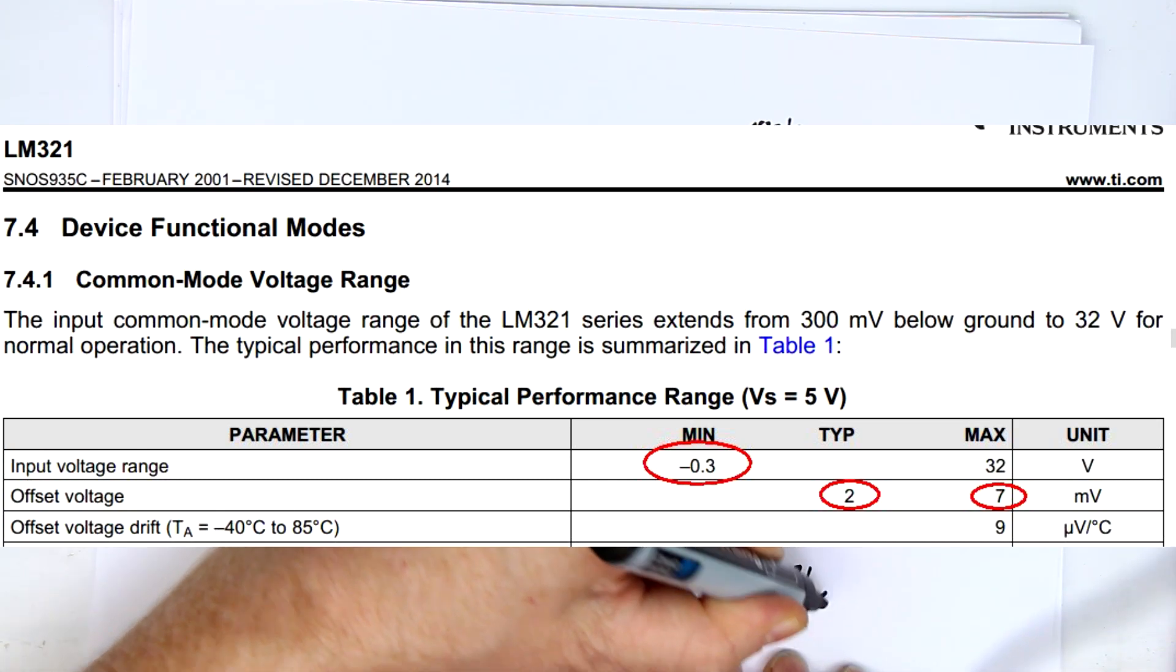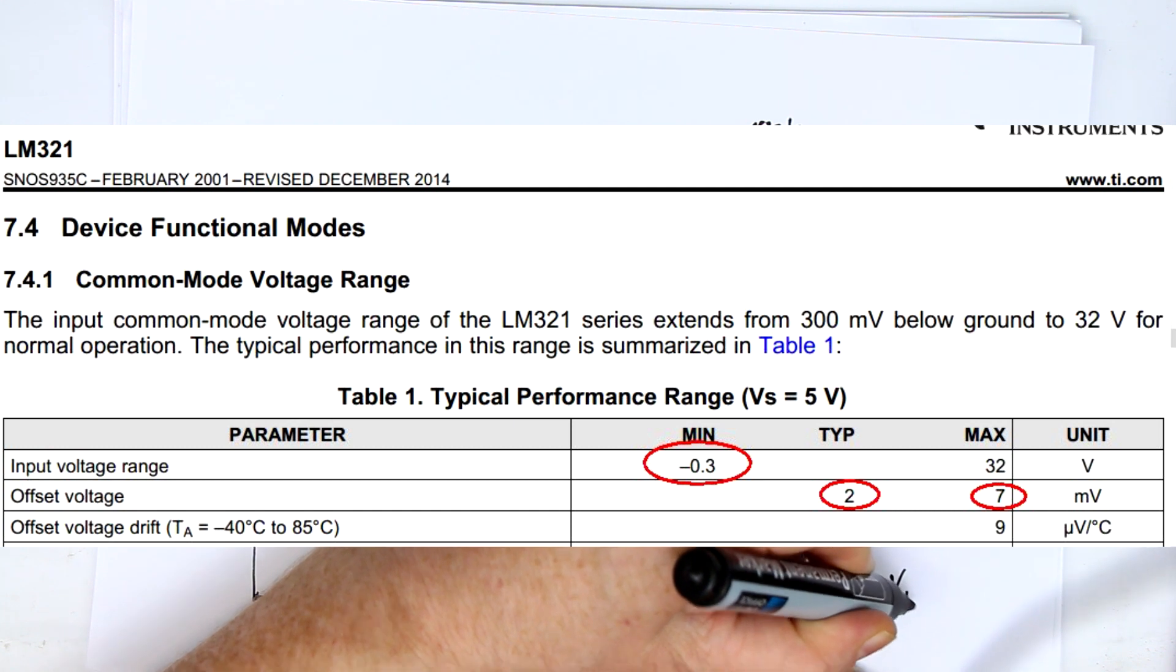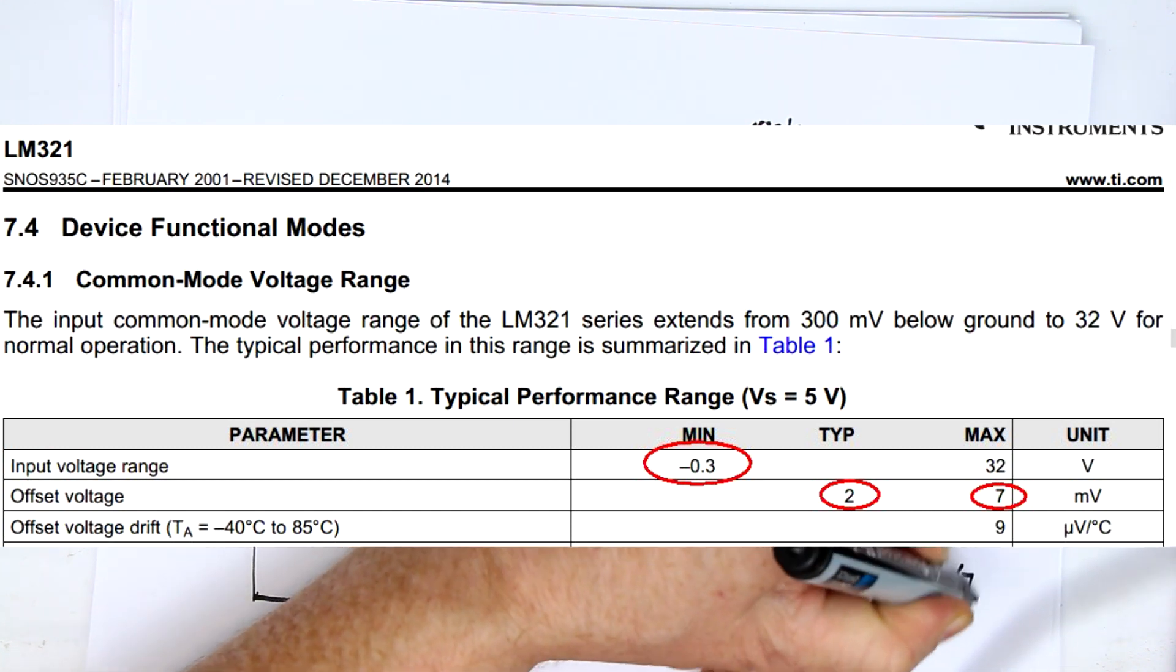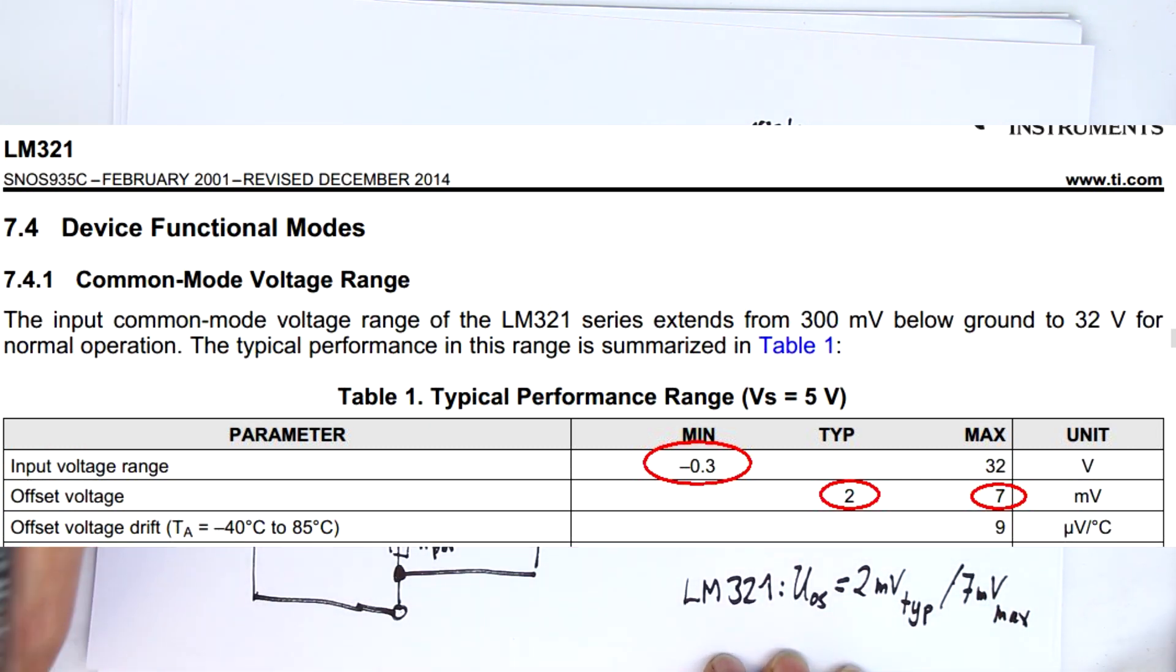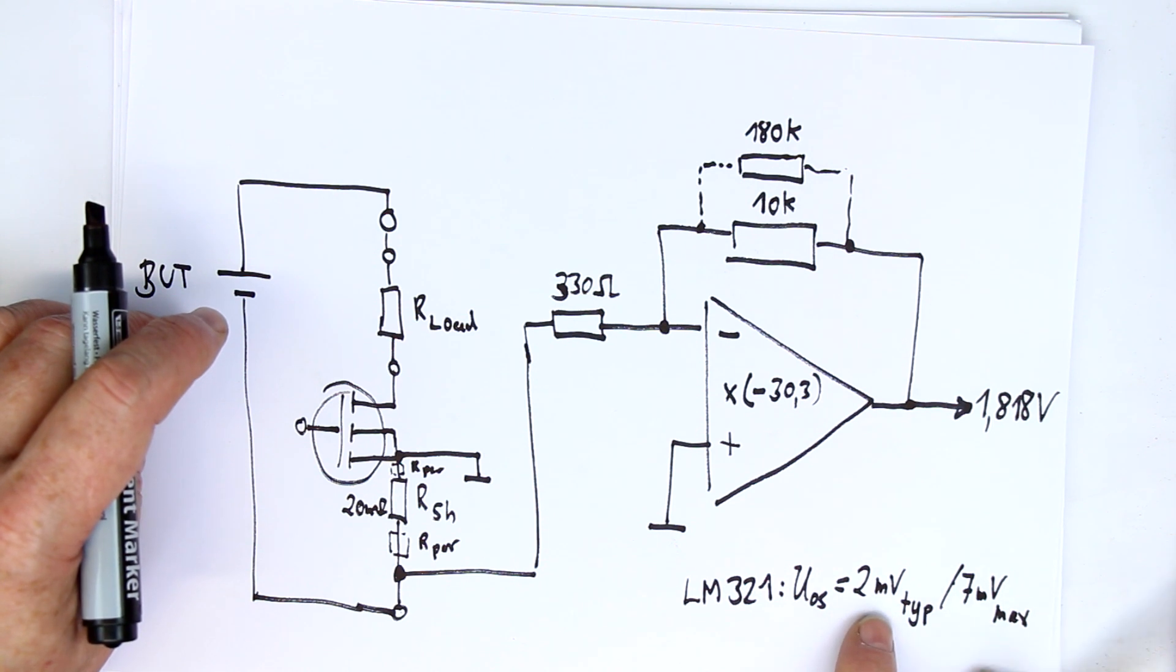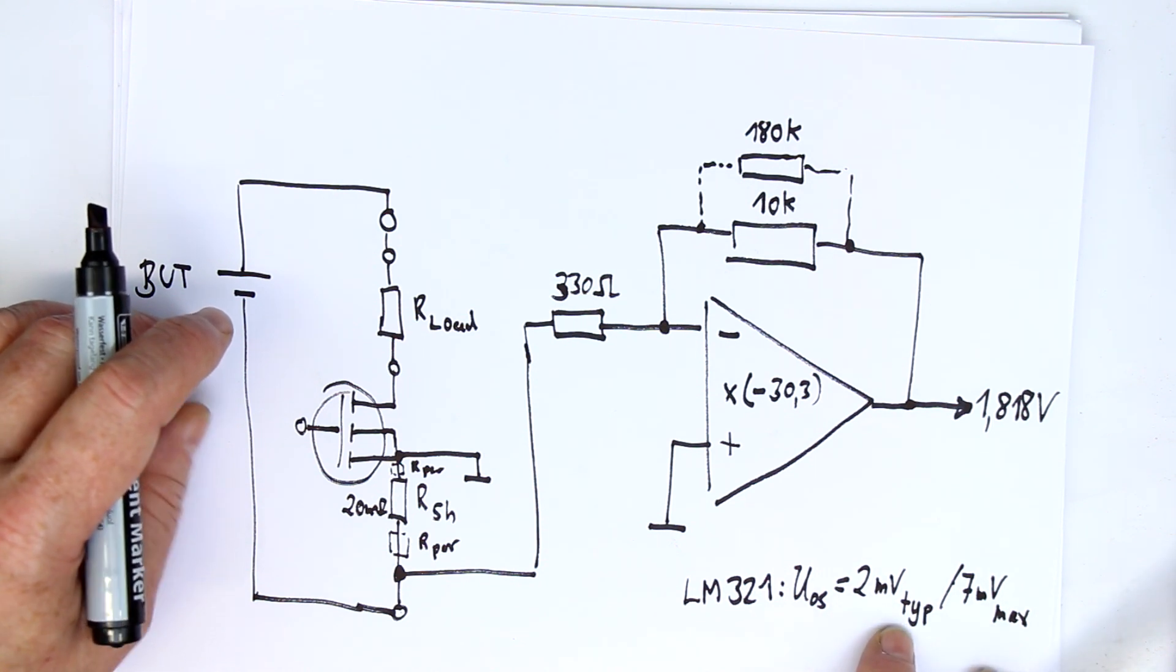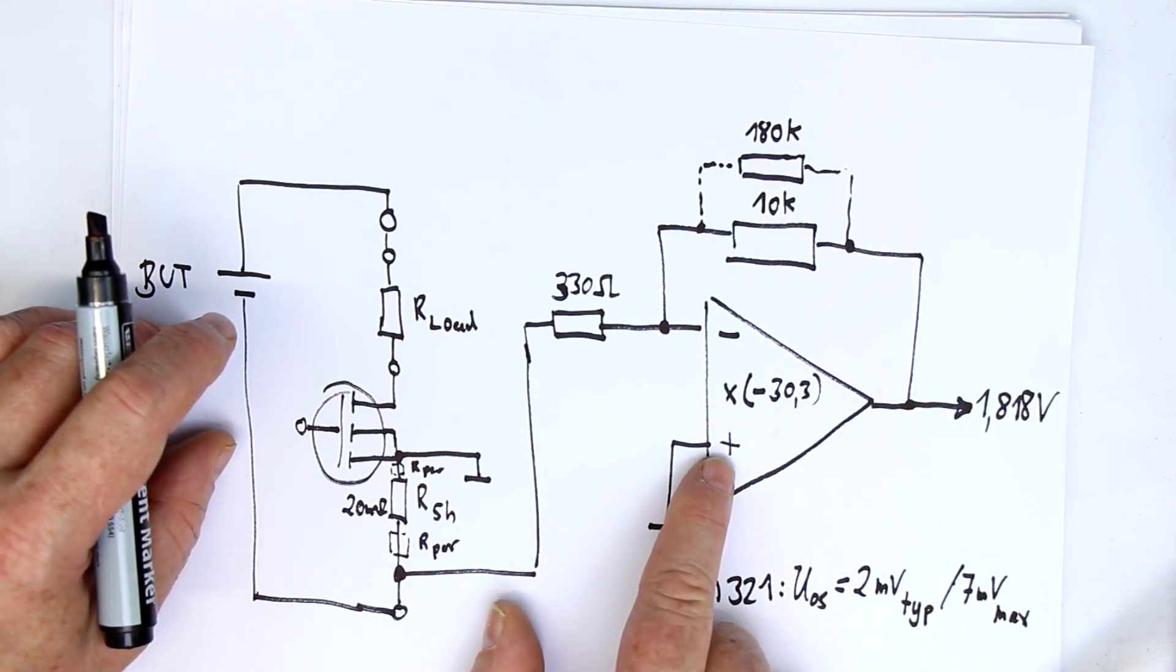That's a voltage that is near the value of the offset voltage that the LM321 has. According to the data sheet, the offset voltage is 2 millivolts plus or minus, typical, and a maximum of 7 millivolts. So 660 microvolts, or two-thirds of a millivolt, this is quite near to the offset voltage. How does this come into play?